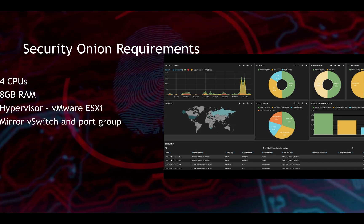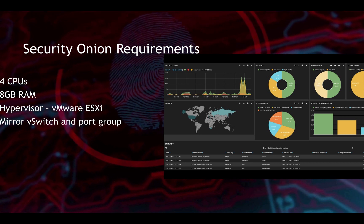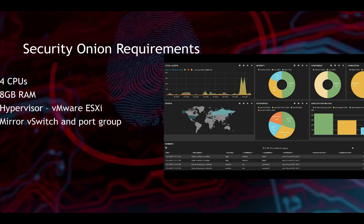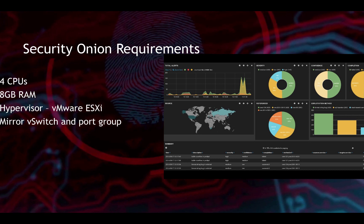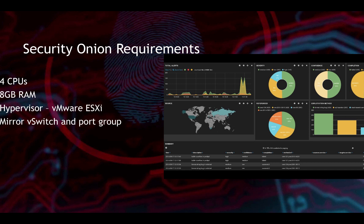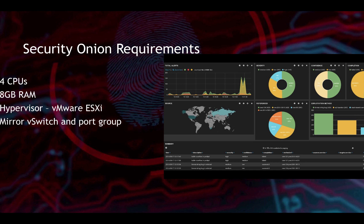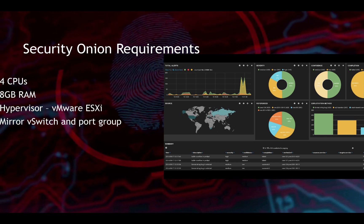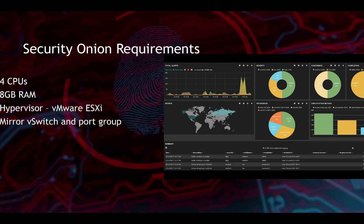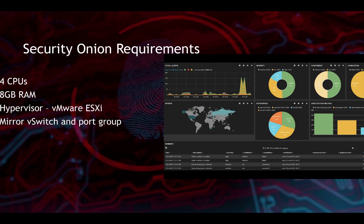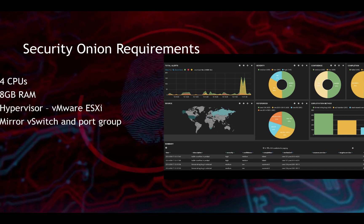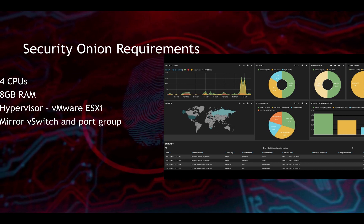You also realize these are the requirements: CPUs, gigs of RAM, and a hypervisor. In this case we'll be using VMware ESXi — you can use VirtualBox or any other hypervisor. If you're using VMware, you need to mirror every vSwitch and also create a port group in promiscuous mode. You can view my previous video where I show you how to mirror a vSwitch and a port group. Now that we know our ticket, let's get into the video and I'll show you how to install your first Security Onion VM in VMware.